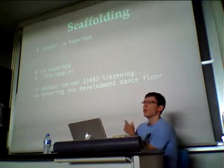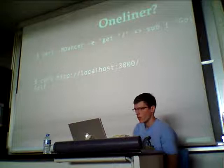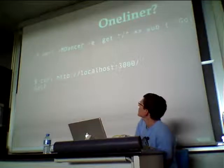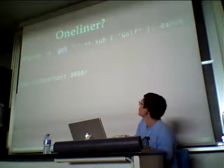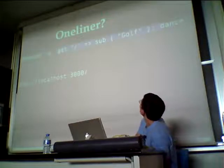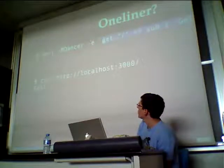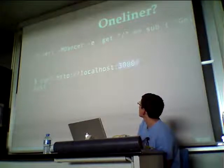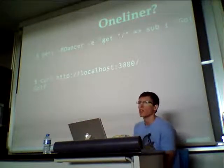You're not obliged to do scaffolding. You can do a one-liner. You can use Dancer as a module directly and execute your routes directly in a one-liner, then call dance at the end. If you curl the server it will return the expected content. The default port is 3000. So yes, you can use it without scaffolding.